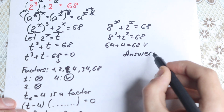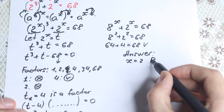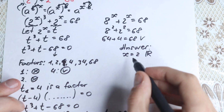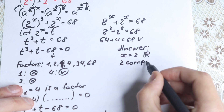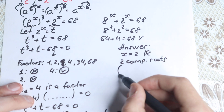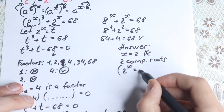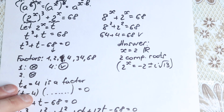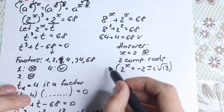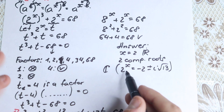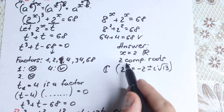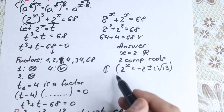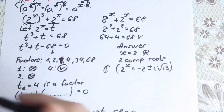So our answer: x = 2 is our real number root, and we have 2 complex roots from the quadratic. For those complex roots, 2^x equals minus 2 plus or minus i times square root of 13. To fully solve for x, we can take log on both sides: x equals log of that expression divided by log 2. This is our complete answer to this interesting problem.